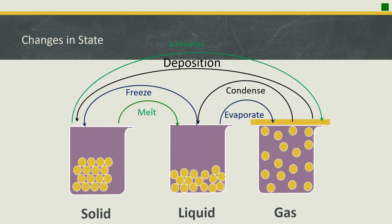Here's a visual of what the previous slides have shown: going from solid to liquid to gas. Going from solid to liquid is called melting; going from liquid to gas is evaporation. Writing this down is a great visual aid, and any time we can visually draw something in this class, it's great for memory.